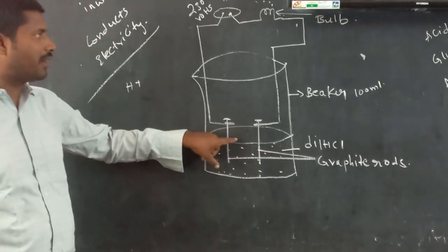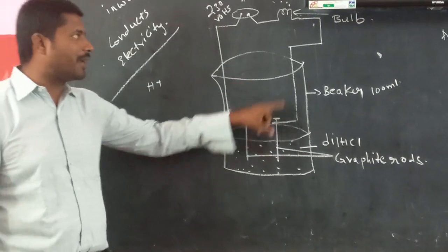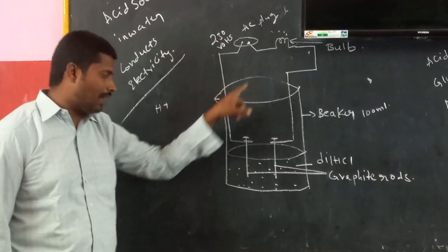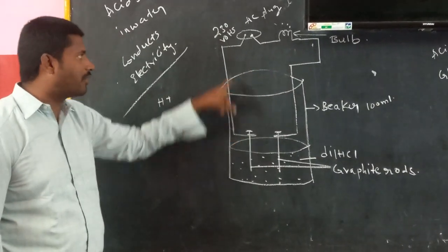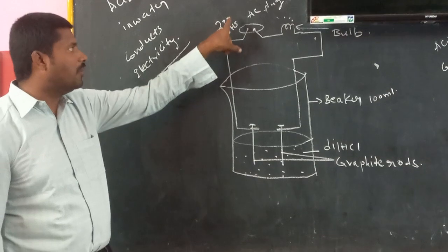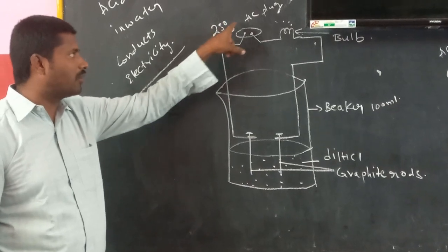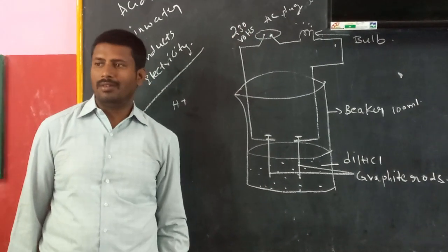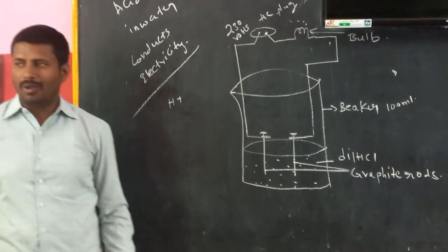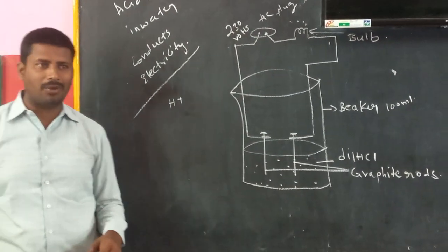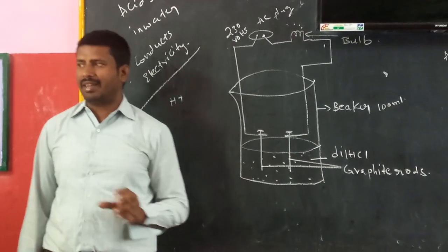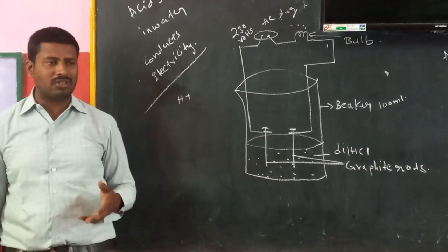One graphite rod should be connected to the bulb. The other graphite rod should be connected to the 230 volts AC supply. Then what happens: when electricity conducts, the bulb glows.